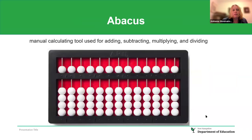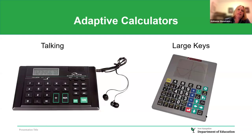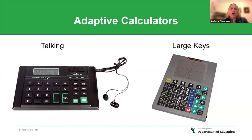An abacus is a manual calculating tool for adding, subtracting, multiplying, and dividing. There are also adaptive calculators — a talking calculator and one with large keys — both available through Maxi-Aids.